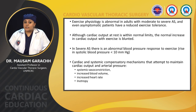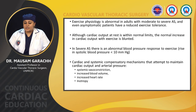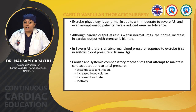Although cardiac output at rest is within normal limits, the normal increase in cardiac output with exercise is blunted. In severe aortic stenosis, there is an abnormal blood pressure response to exercise — the rise in systolic pressure is less than 10 mmHg. Cardiac and systemic compensatory mechanisms attempting to maintain cardiac output and arterial pressure include systemic vasoconstriction, increase in blood volume, and increase in heart rate and inotropy.